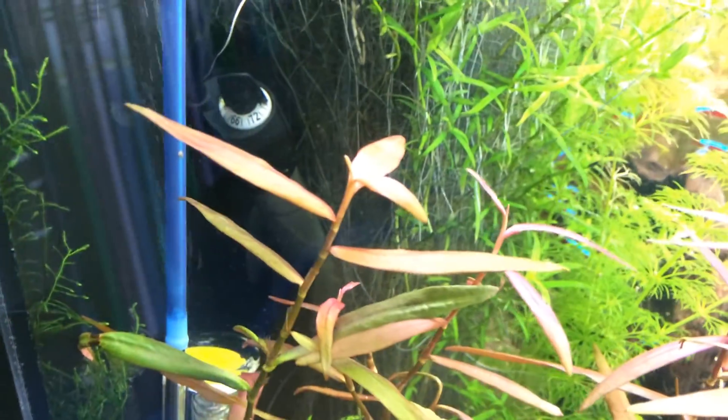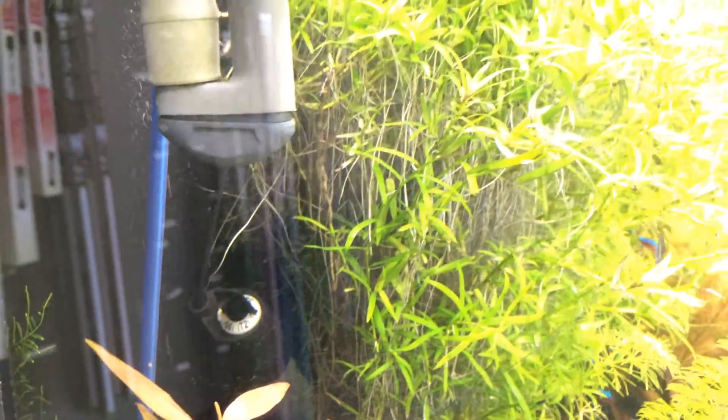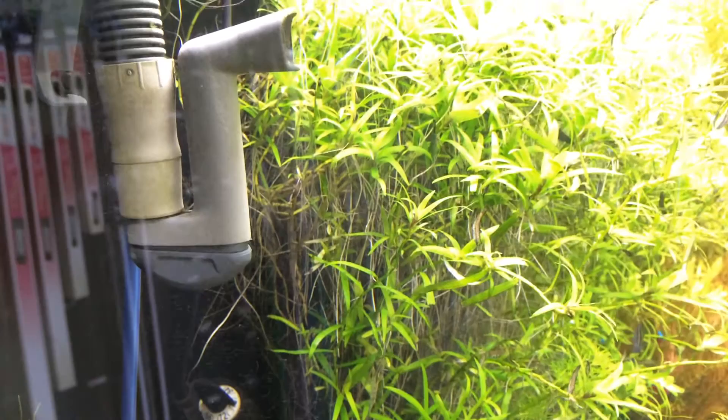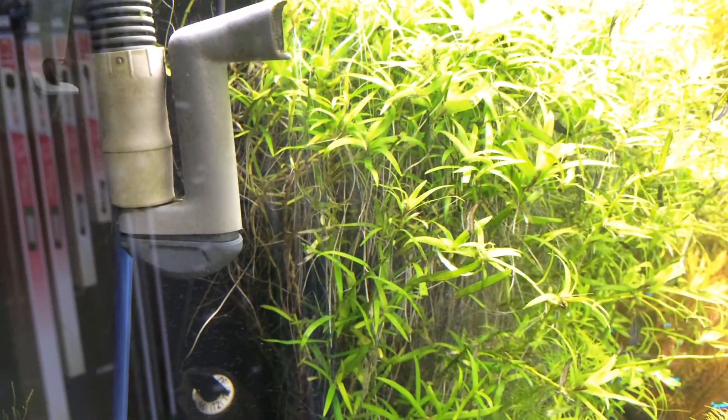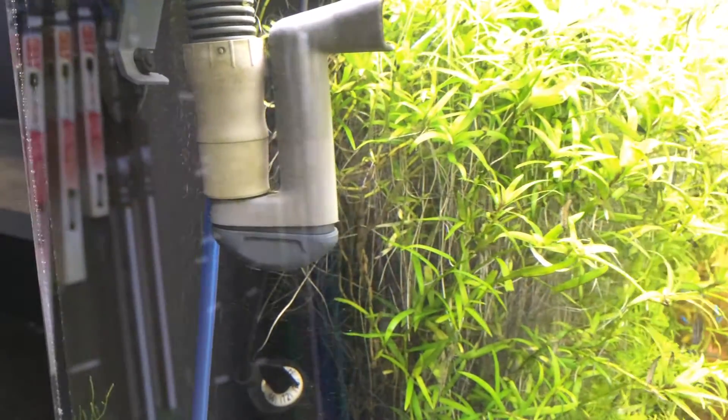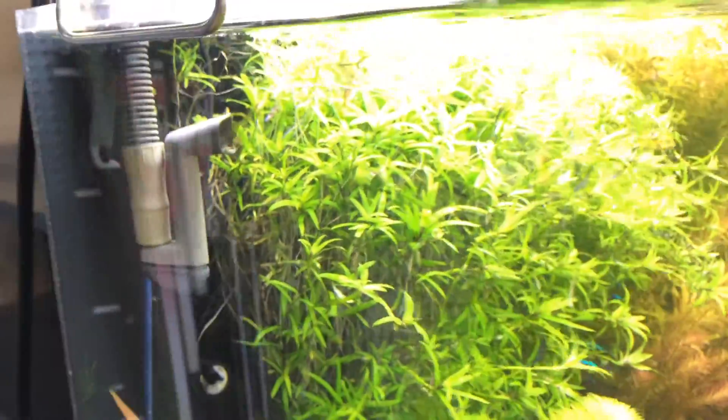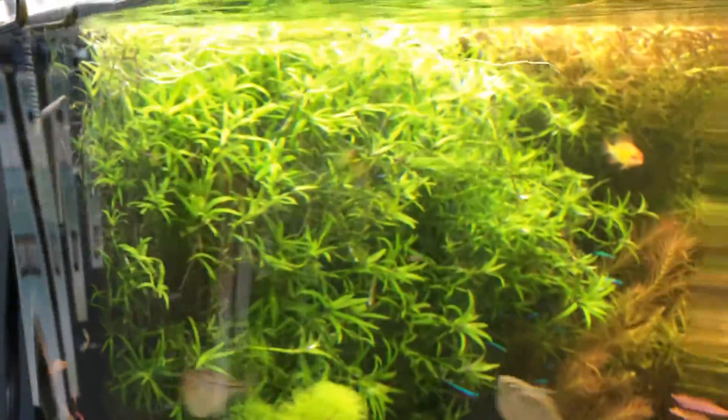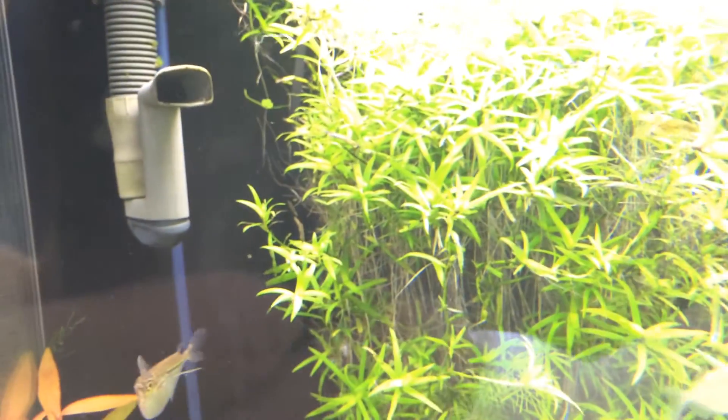Now you always want to make sure that your diffuser inside the tank is by your return valve for your filter. You want to make sure that it's by the return valve so that it can get dispersed into your aquarium in the most efficient way possible.